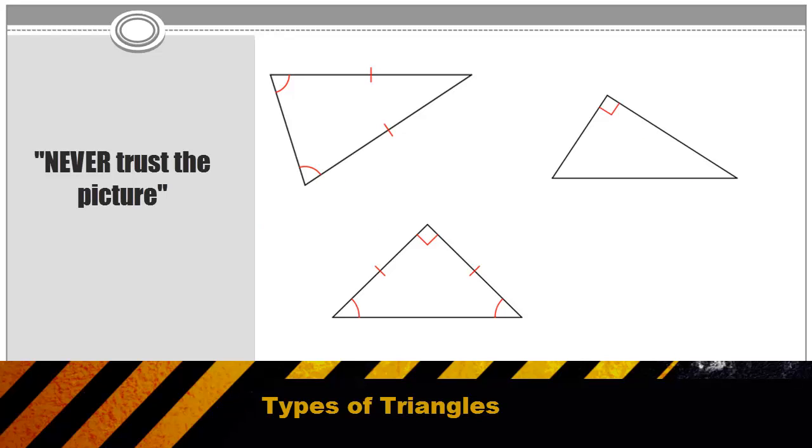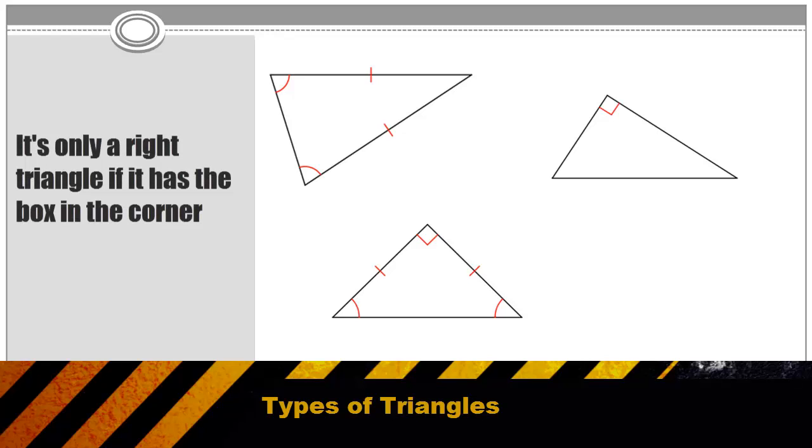One of the most important rules with geometry on an exam is never trust the picture. Just because a triangle looks like a right triangle or looks like an equilateral triangle doesn't mean it is. You can only assume a triangle is a special triangle if they either tell you in the question or if they put special markings on a triangle.